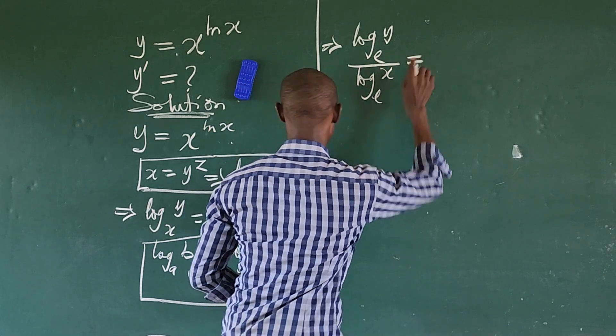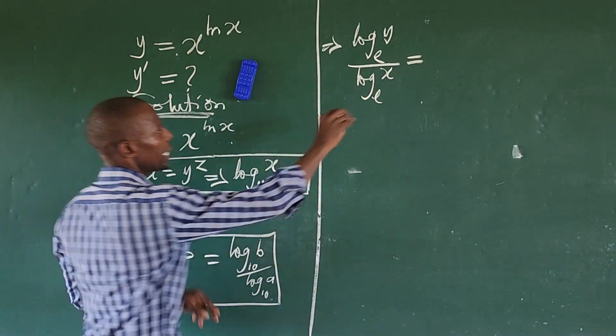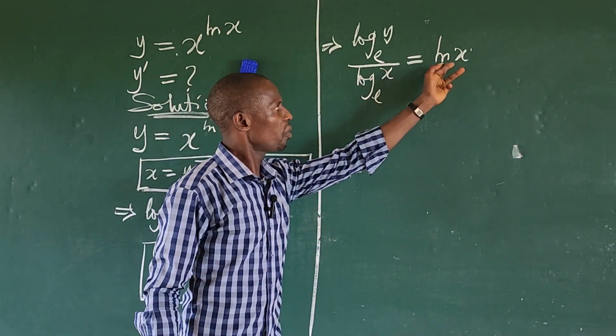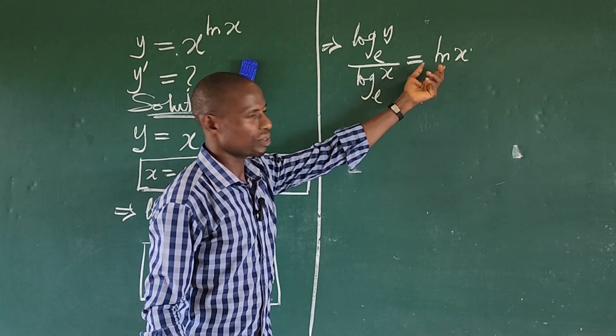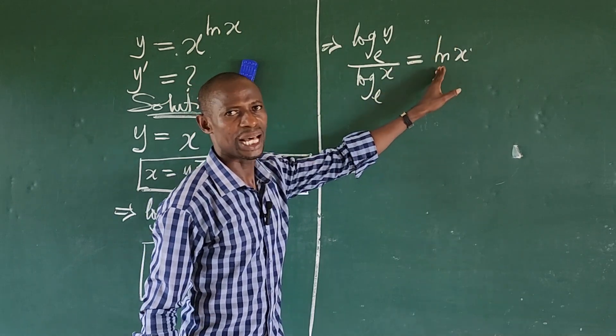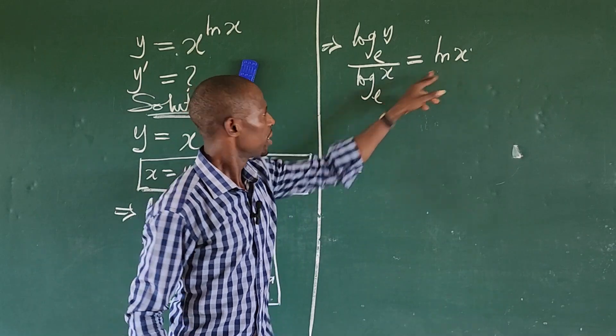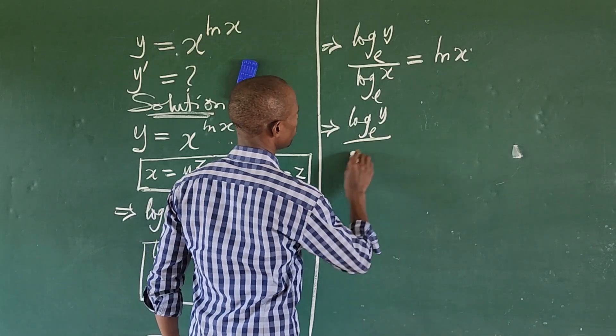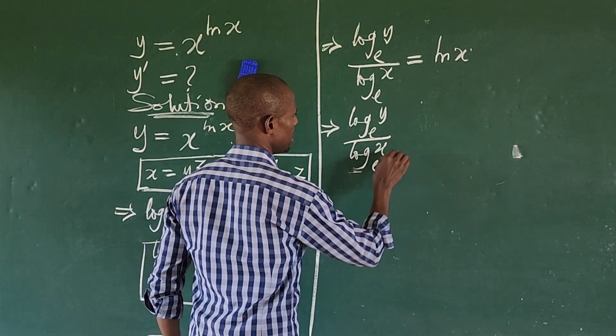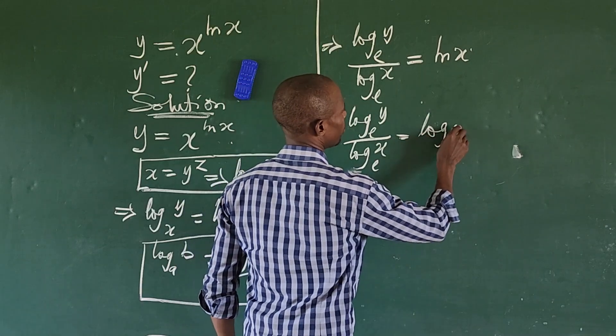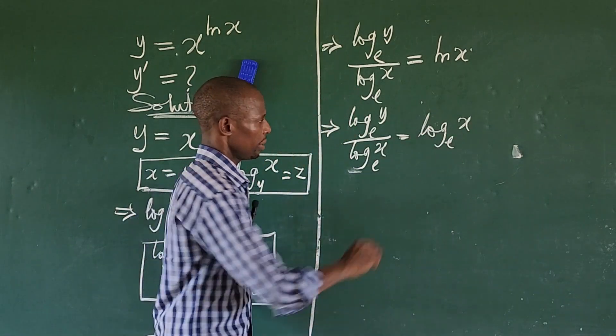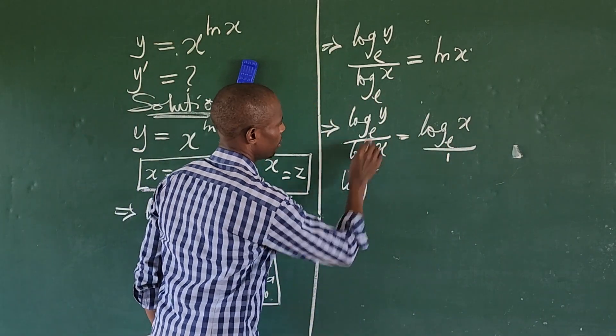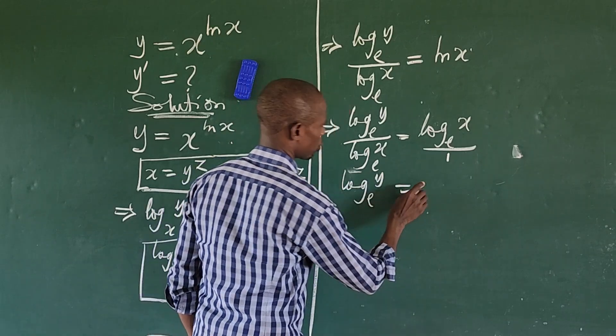What we have here is the same thing. Now, ln of x is also base e, so this is also natural log. So what you have here is the same thing as log x base e. So rewriting this, this now implies that log y base e over log x base e is equal to log x base e. Now this is over one. We can cross multiply to give us log y base e equals log x base e times log x base e.